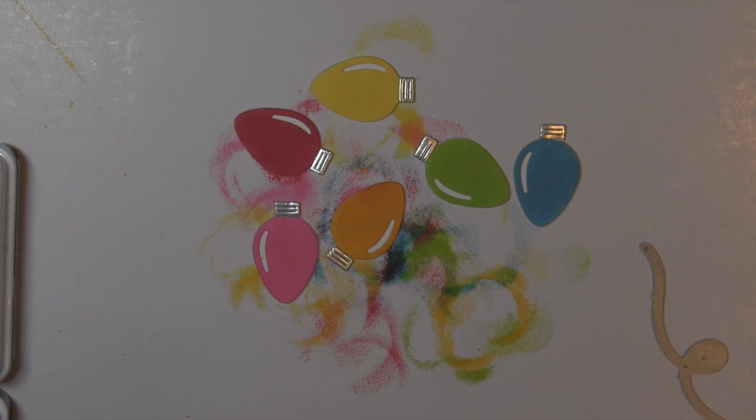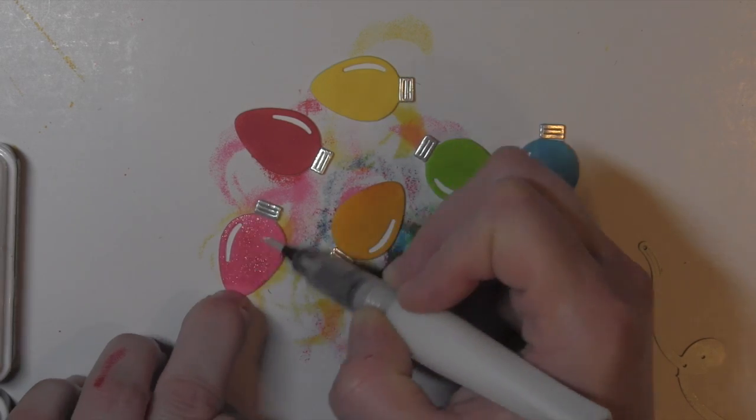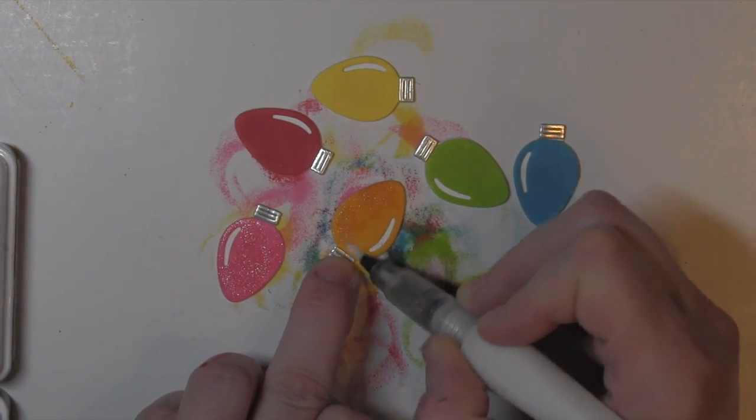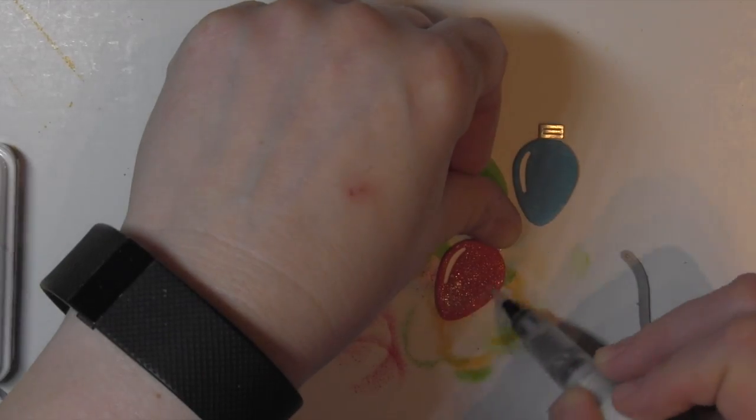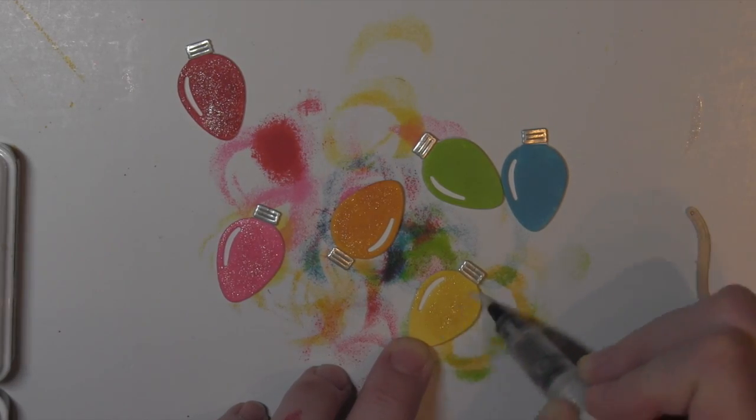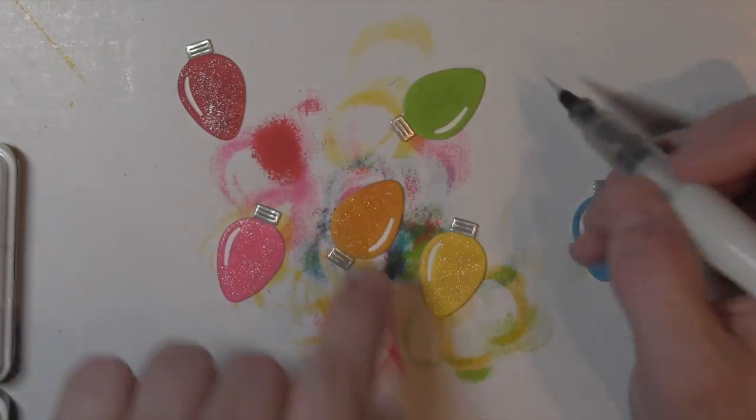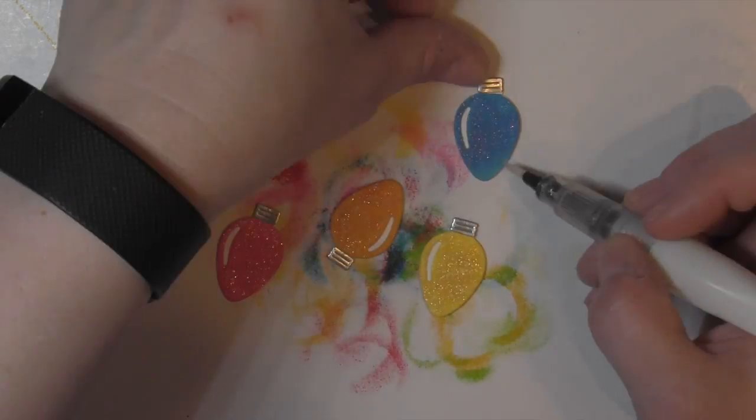Before I do that I am going to take the Wink of Stella clear glitter brush pen and just color all over the colorful part of the light bulbs. Give them a little bit of glitz and glimmer. I love the Wink of Stella for this. And then set those aside to dry for just a second.